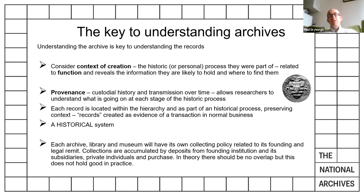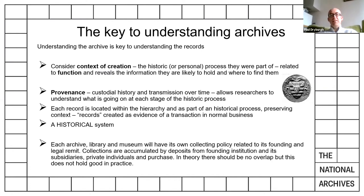The real key to understanding archives is to consider the context of creation. You've got to understand the historic or personal processes of which records are part, as that tends to relate to function and reveals what information records are likely to hold. Within the medieval state, for example, there were several arms of government: the Chancery, which is the writing office; the Exchequer, the financial office; the law courts; and various other offices of state, each with their own functions. Those functions then generate records due to the legal, financial, and secretarial interactions that government needed to fulfil.